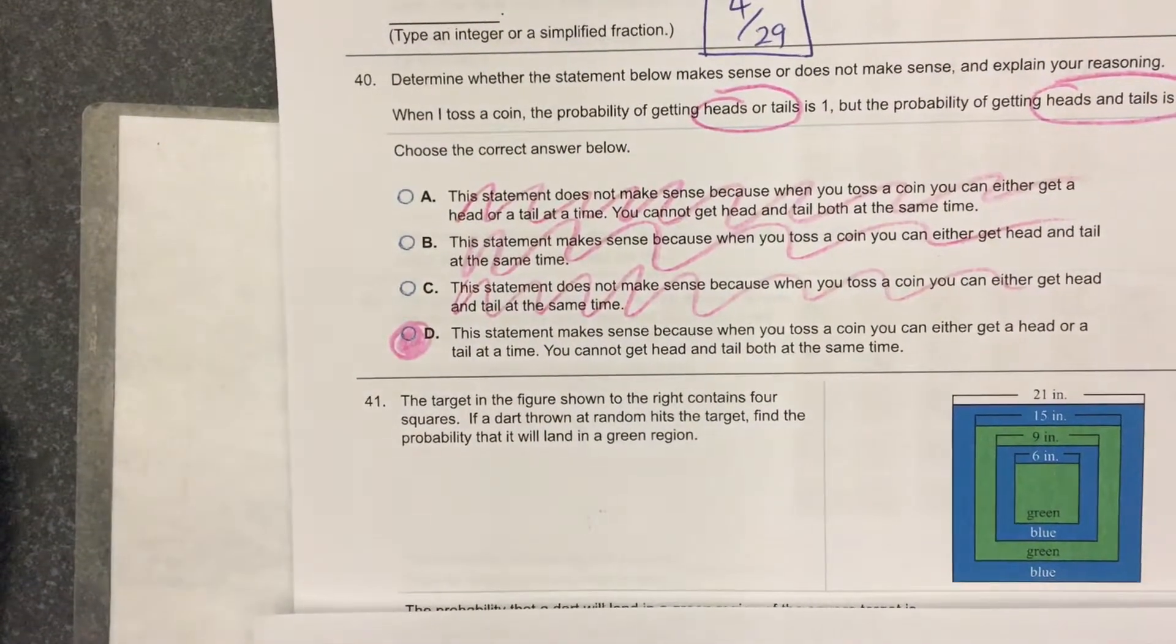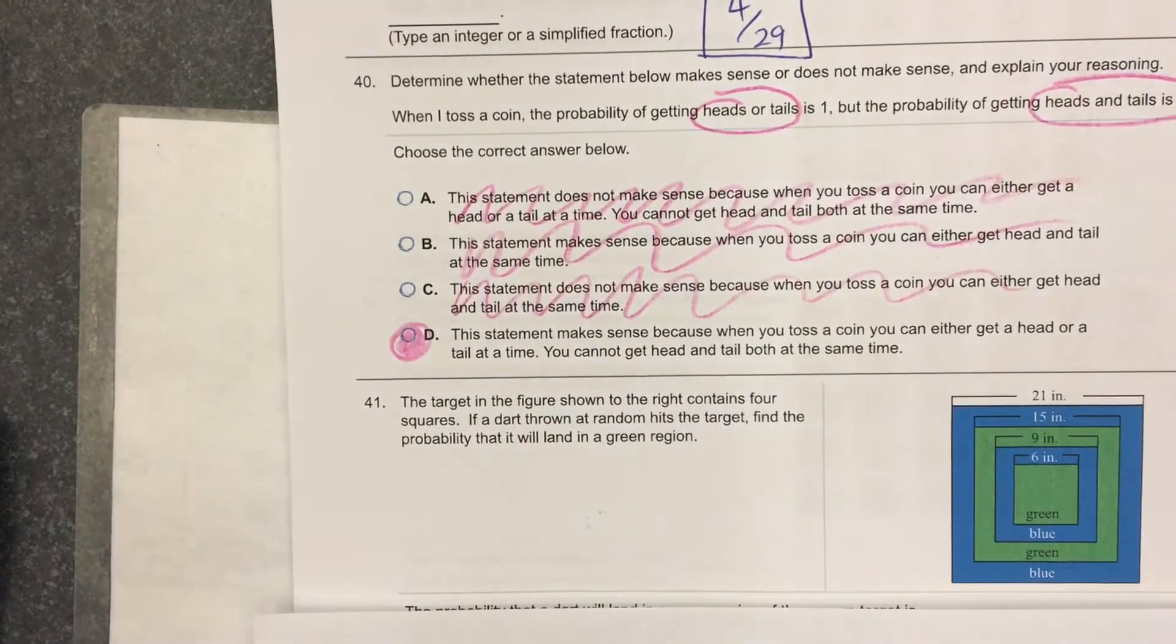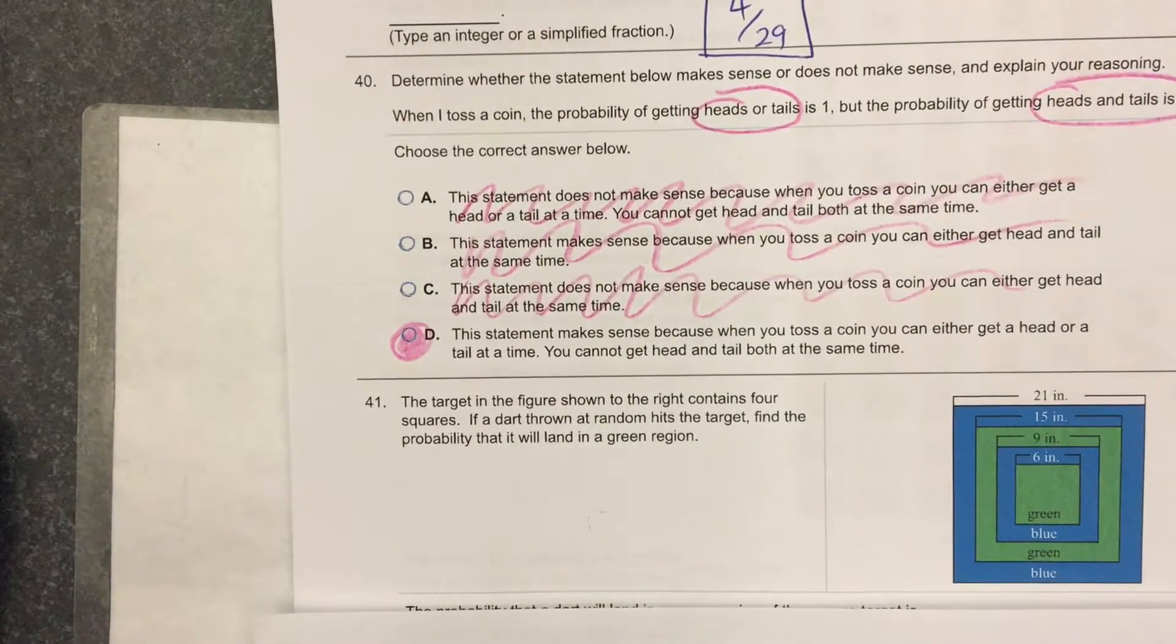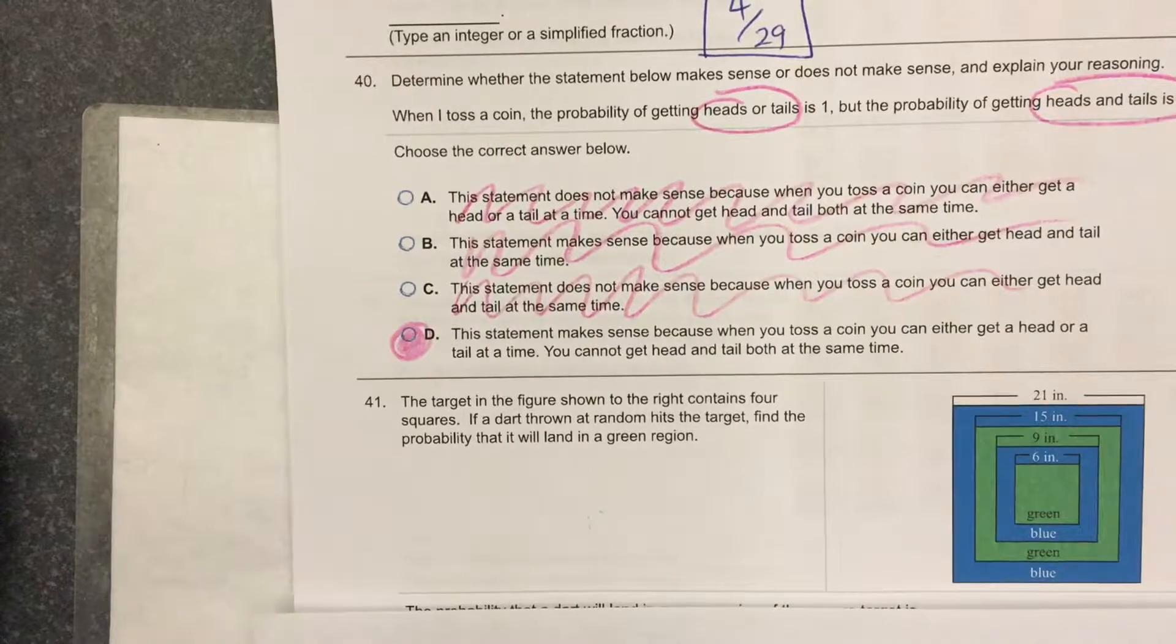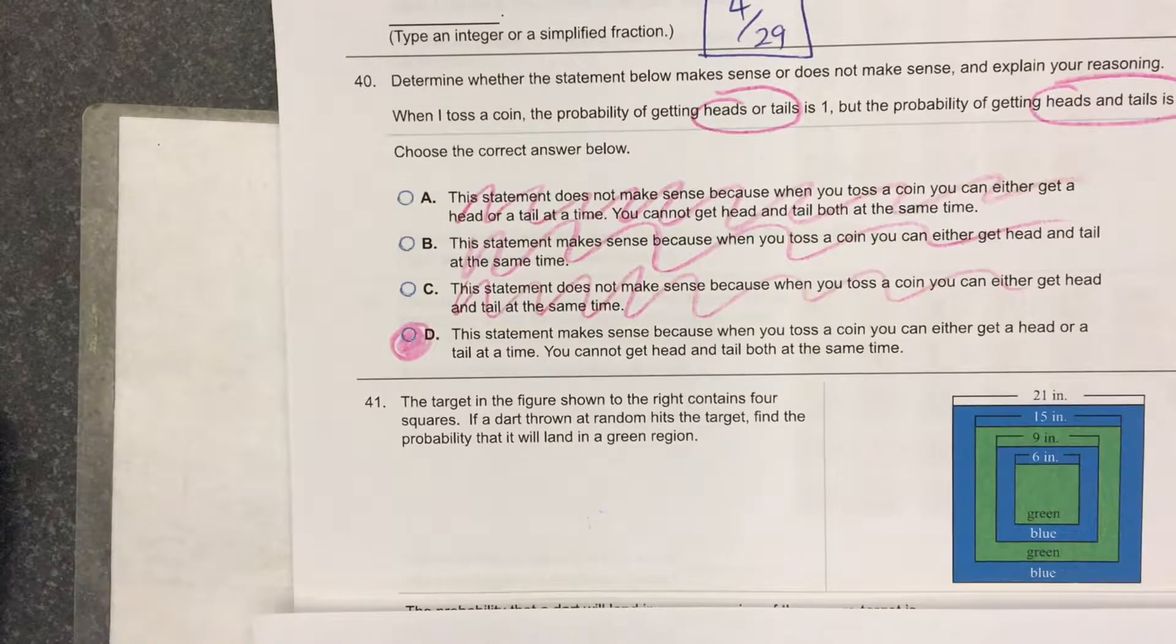Number 41. The target in the figure shown to the right contains four squares. If a dart thrown at random hits the target, find the probability that it will land in a green region.